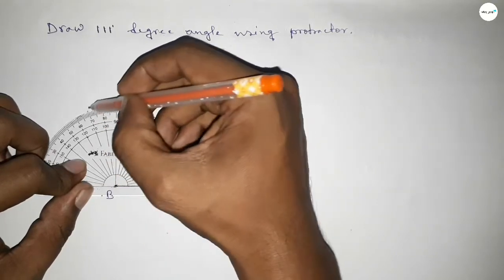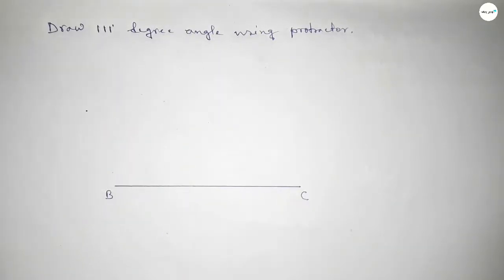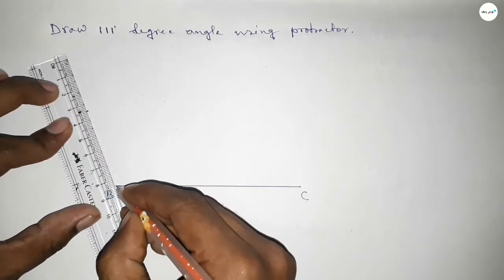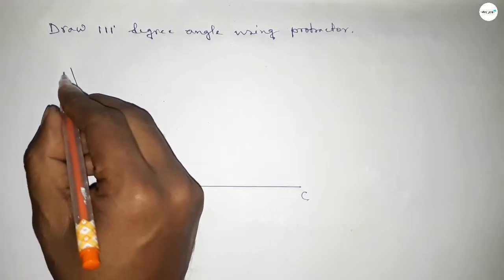So this is 111 degree. Now joining this side to get 111 degree and taking here point A.